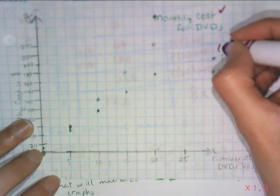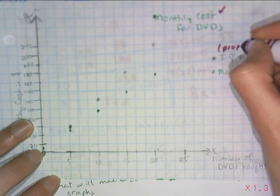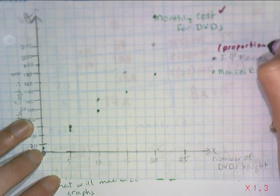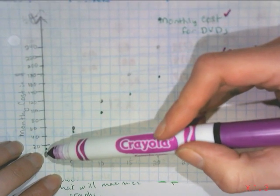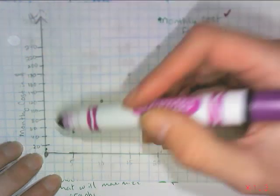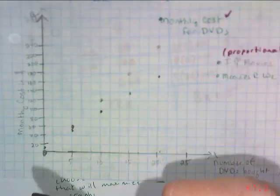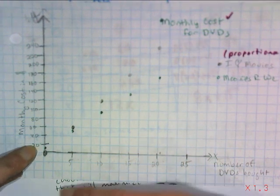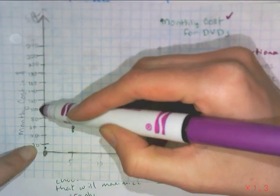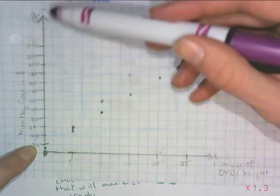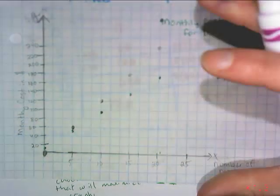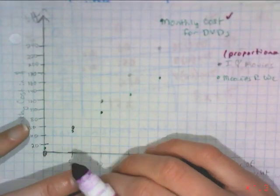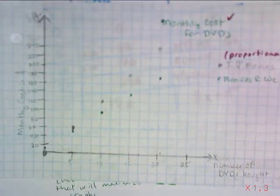So you don't have to label every single one of these things. You could have labeled every other one and just kept it consistent. So for instance, I could have said this one was 20, labeled 60, label 100, and every other one would make it a little less cluttered. But no matter how you do it, you need to make sure that you have your data maximized on this graph.